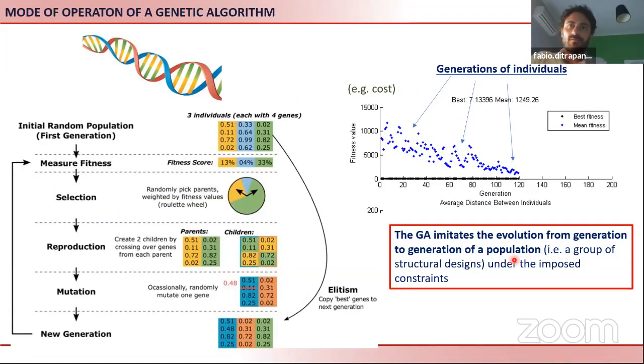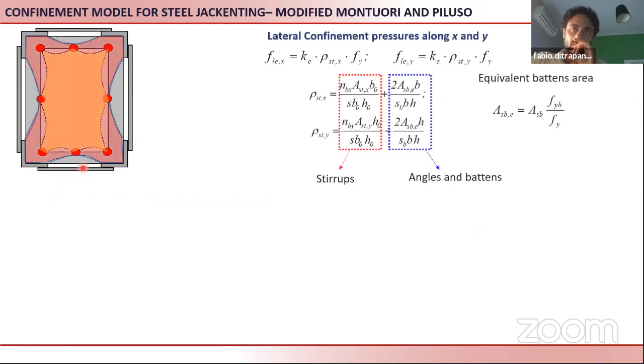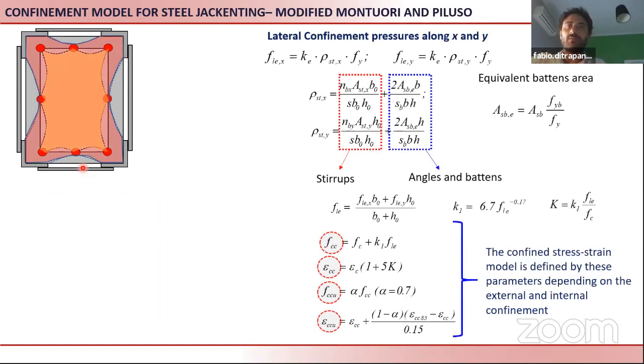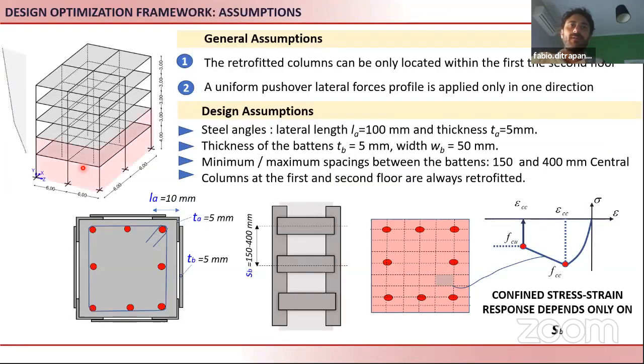I don't go into details on genetic algorithms because I know that most of you are expert on these. So our case studies are traditional RC frames, basically not seismically designed. We have models in OpenFiber section for space elements and we have assigned some stress-strain models. We have defined some stress-strain models for taking into account the confinement action by the jacketing.